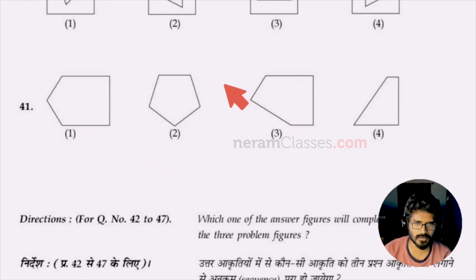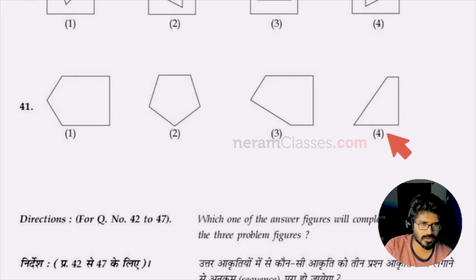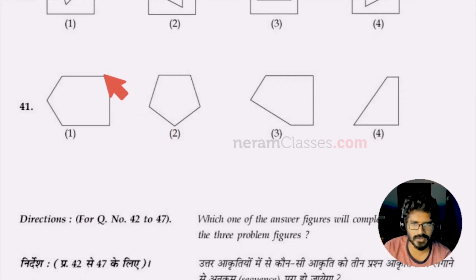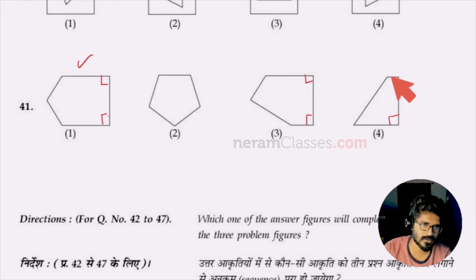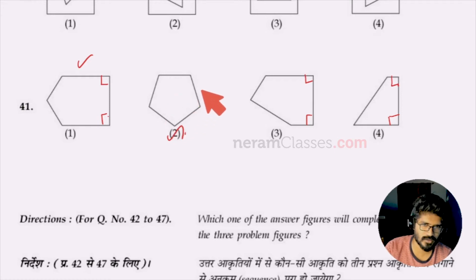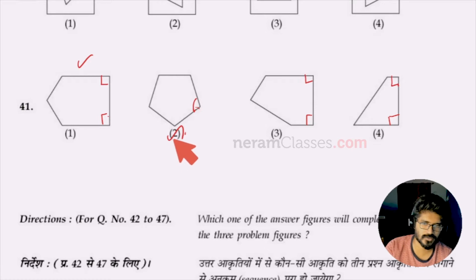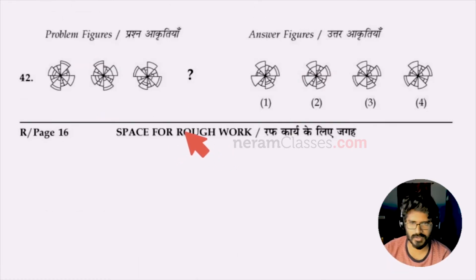For question 41, the relationship I find is that each option has two 90-degree perpendicular lines. In option two, however, those are missing — there is not even a single 90-degree angle; everything is an obtuse angle. So option two is the odd option.